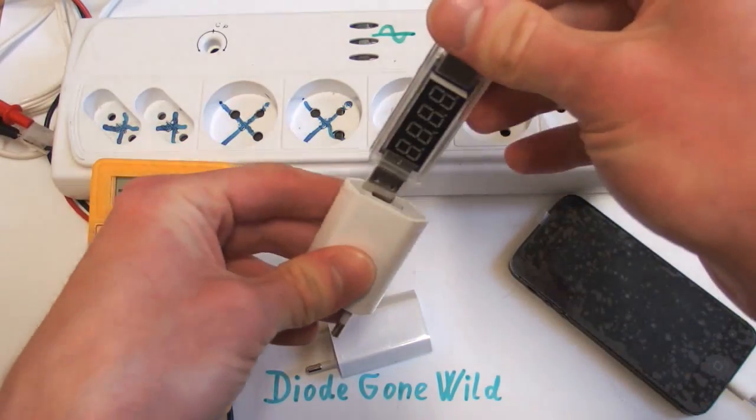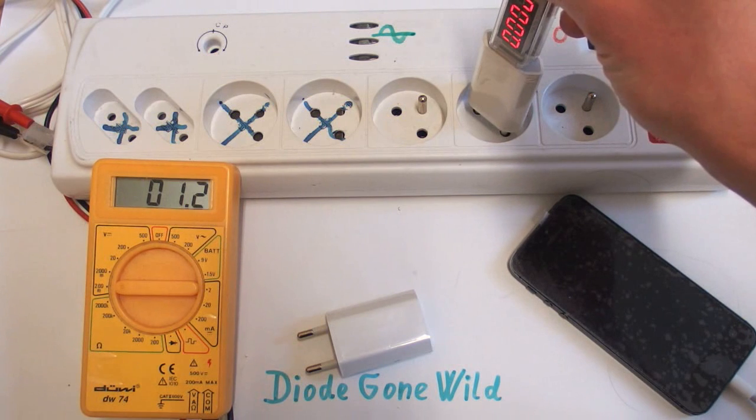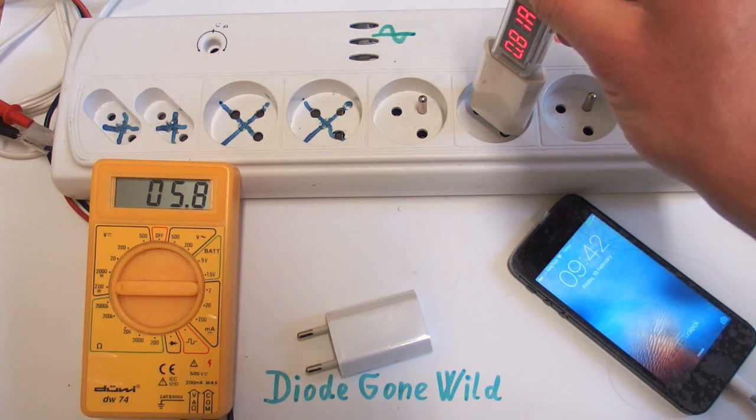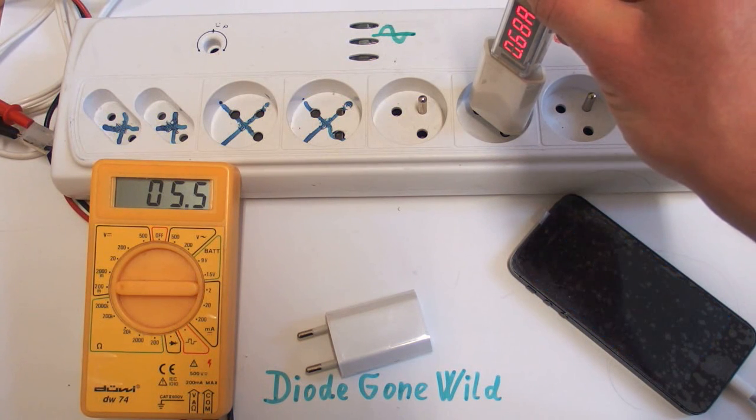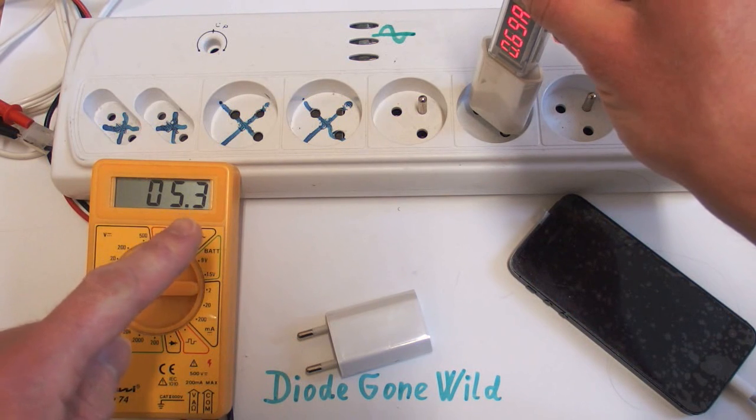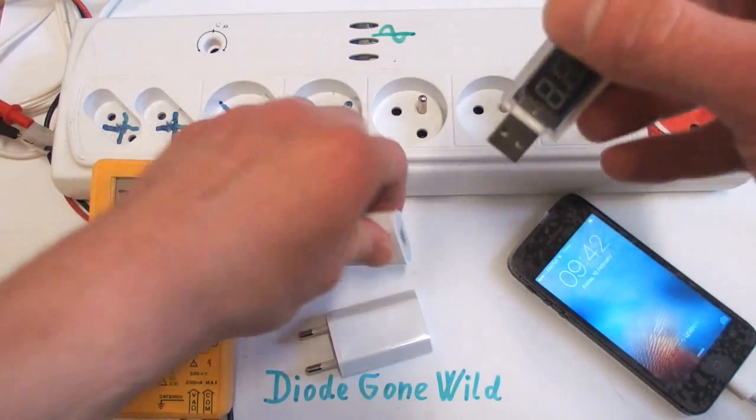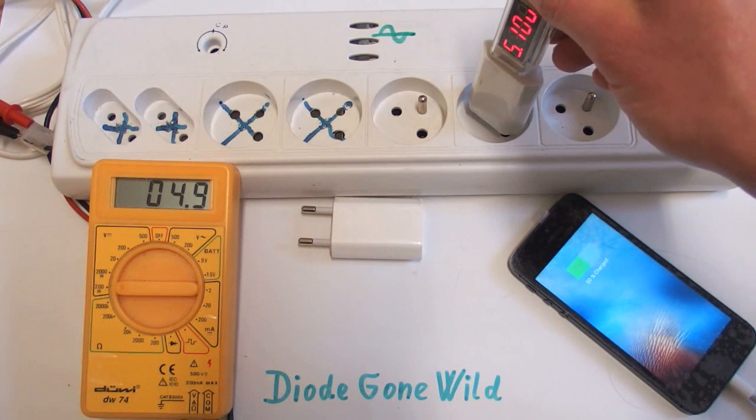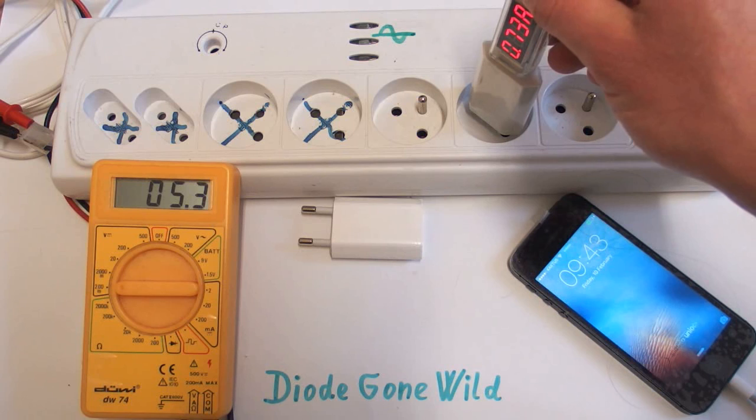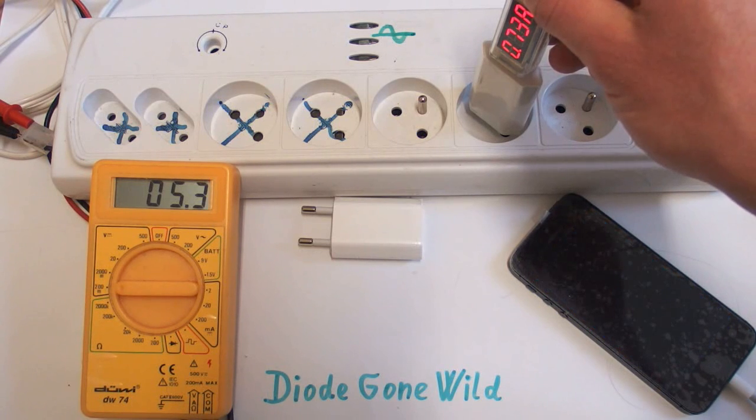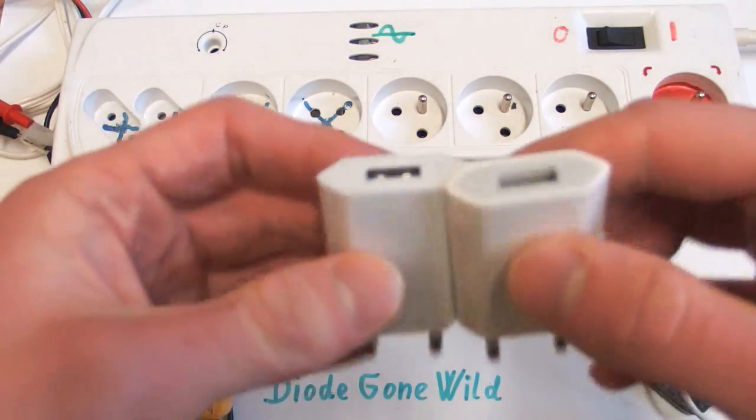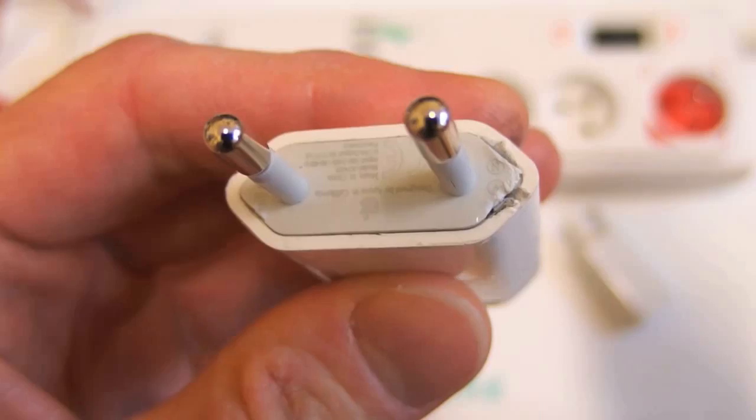Let's do a test. This is the real one and gives 5.12 volts at about 0.8 amps and the power drawn from mains is about 5.3 watts. And the other one 5.11 volts charging at about 0.7 amps and the power from mains is 5.1. It looks like it's an identical copy, but let's take a look inside.